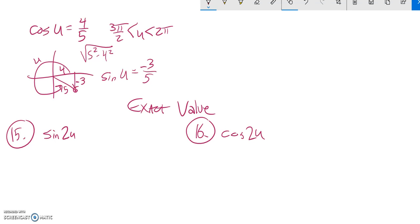So sine of 2U. If we double this angle, what would the sine of its value be? We could do a double angle relationship or break it up and treat it like sine U plus U. I'm going to just use that double angle formula. I know that sine of 2U is the same as 2 sine U times cosine U.